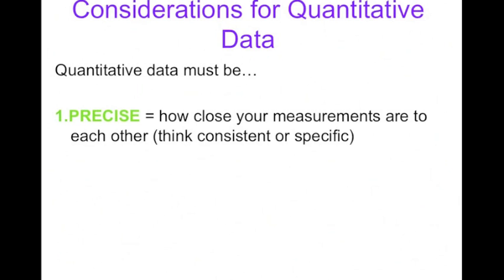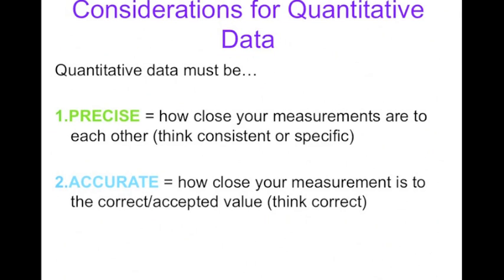We want our measurements to be accurate. Accuracy measures how close your measurements are to the correct or accepted value. When you think accurate, you think correct. If someone is five feet two inches tall, that is the known or correct or accepted height that they have. When you measure them with a ruler, you should be getting five feet two inches tall if it's an accurate, correct measurement.